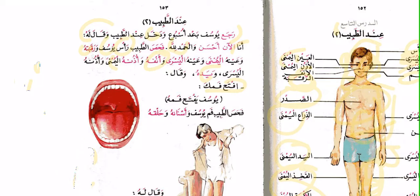فحص الطبيب فم يوسف وأسنانه وحلقه — the doctor inspected the mouth of Yusuf, his teeth, and his throat. الحلق is the throat.